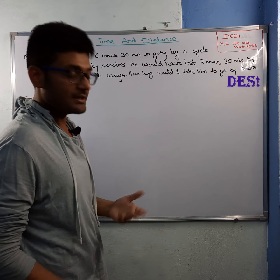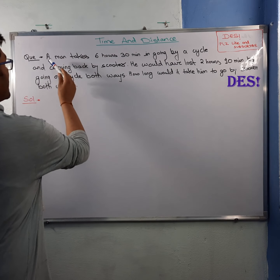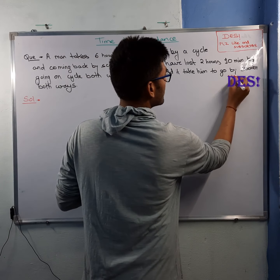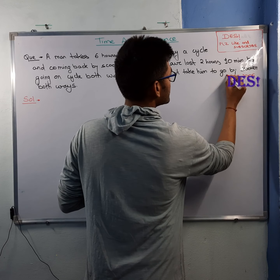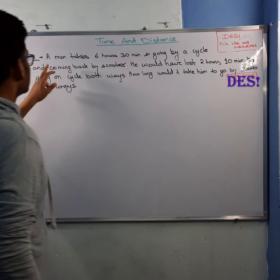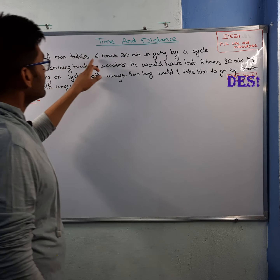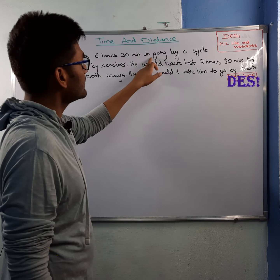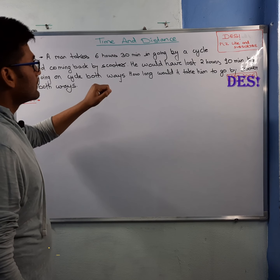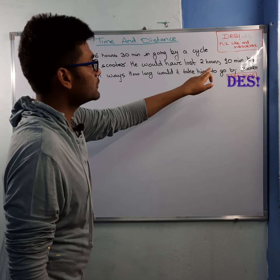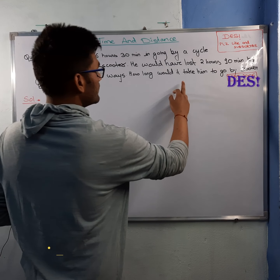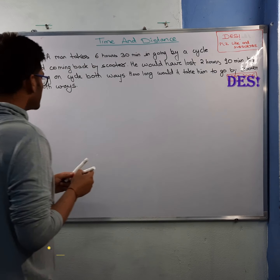This question is based on time and distance. It came in MAC 2006 and it is a good question. The question asks: a man takes six hours thirty minutes going by cycle and coming back by scooter. He would have lost two hours ten minutes by going on cycle both ways. How long would it take him to go by scooter both ways?